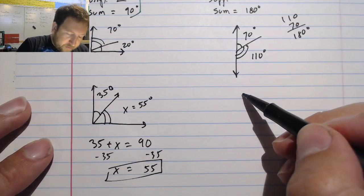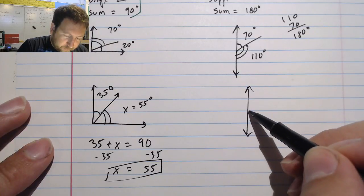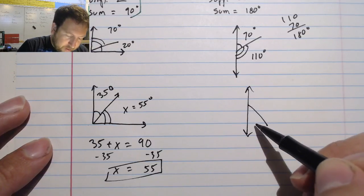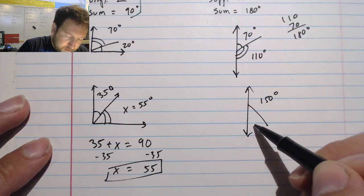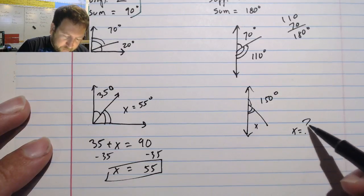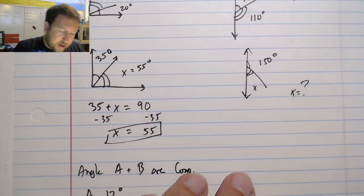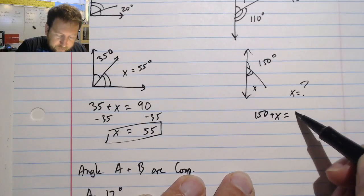Now they might give me a similar problem. They might say, okay, here's your angle. And this side here is 150 degrees. This is x. x equals what? Okay, well, I know that my two angles, 150 plus x equals 180.